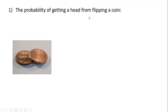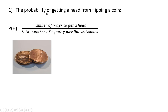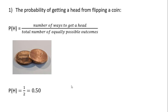So the probability of getting a head from flipping a coin — P(H) — is going to be the number of ways to get a head, and there's only one way, divided by the total number of equally possible outcomes. A coin has two sides, a head and a tail, so it's going to be 1 divided by 2, or 0.5 — a 50% chance of getting a head on flipping a coin.